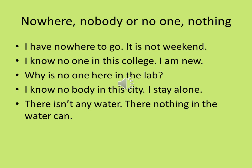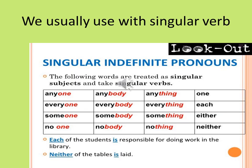More examples with negative forms: nowhere, nobody, no one, nothing. I have nowhere to go — it's not the weekend. I know no one in this college — I'm new. Why is no one here in the lab? I know nobody in this city — I stay alone. There isn't any water. There's nothing in the water can. We usually use a singular verb with anyone, everyone, someone, no one, anybody, everybody, somebody, nobody, anything, everything, something, and nothing.